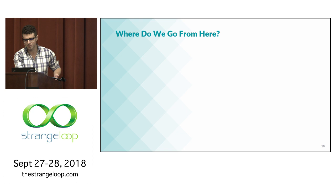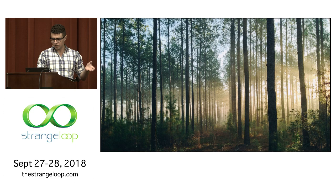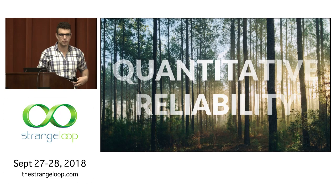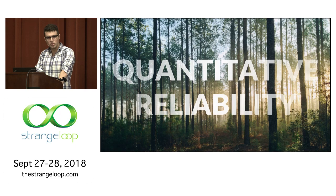These problems kept plaguing us. We realized we couldn't just keep playing whack-a-mole — we needed to be more proactive, we needed eyes over our pipeline, and we needed somebody who could see the forest for the trees. So we created a team and called it Quantitative Reliability. I'm going to spend the rest of the talk telling you about how we think about these types of problems, our role, and some specific problems we've faced and how we've approached them.